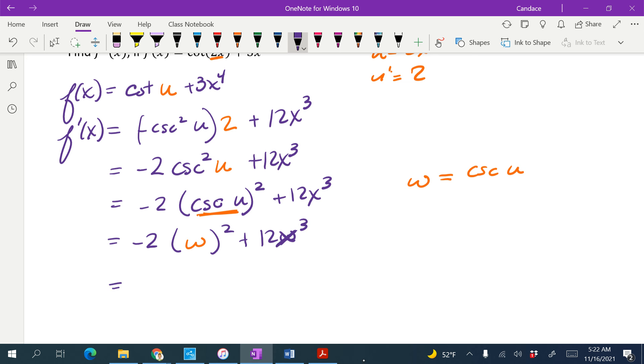Alright, so I'm going to take the derivative of this cosecant one first. So w prime equals, derivative of cosecant is negative cosecant u, cotangent u, and then times the derivative of the inside function, which would have just been the 2.